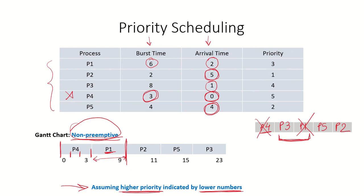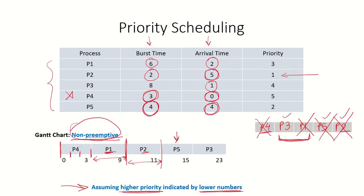Once P1 releases the CPU at time 9, the priorities of P3, P5, and P2 are compared. P2 has the highest priority and runs for 2 time units from time 9 to 11. After P2 finishes, P5 has higher priority than P3, so P5 runs for 4 time units from 11 to 15. Finally, P3 runs for 8 time units from 15 to 23.